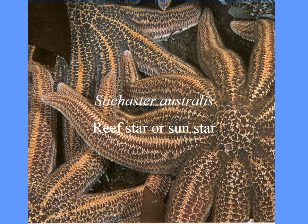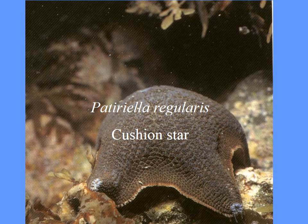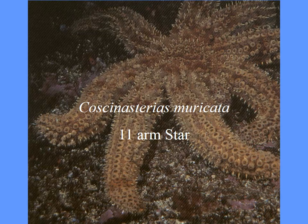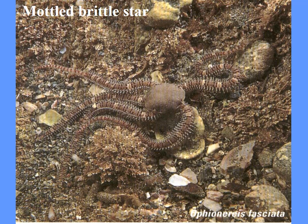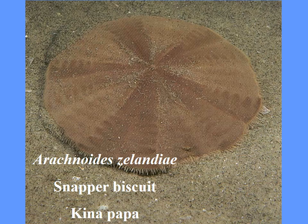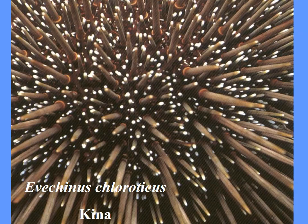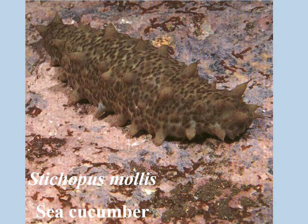Here are a few local ones. We've got a reef star, a sun star which you'll see at Leisure Island quite often, cushion stars by the millions at Pilot Bay and other places in shallow water, an 11-armed starfish, a brittle star — a model brittle star, which is one of the three very common brittle stars we have around the coast on shallow rocky reefs — a snapper biscuit or sand dollar, a kina, and sea cucumbers.